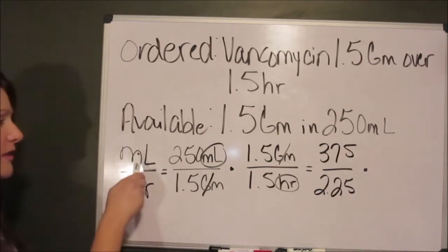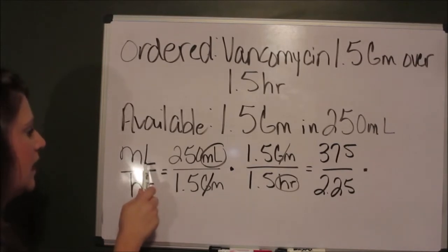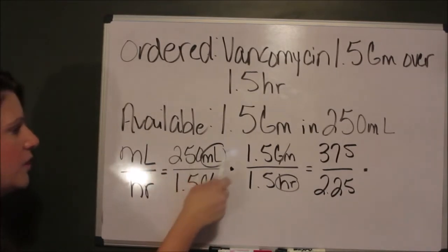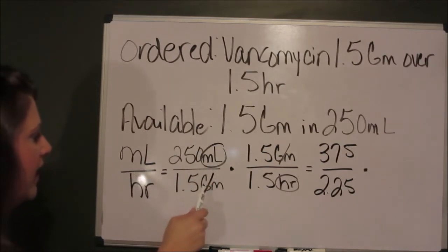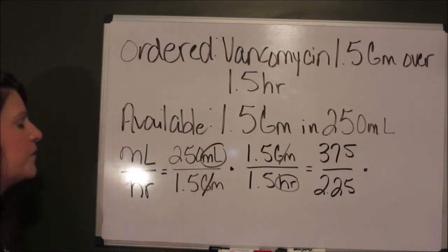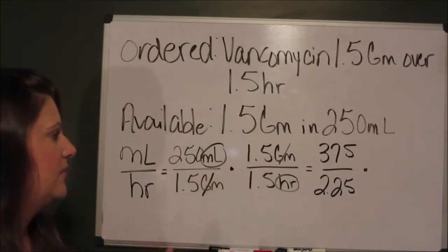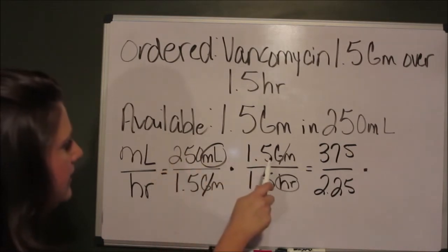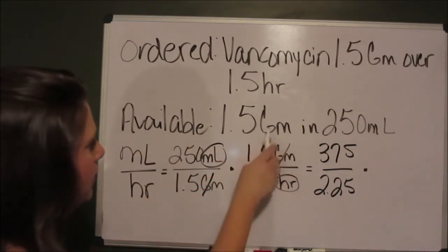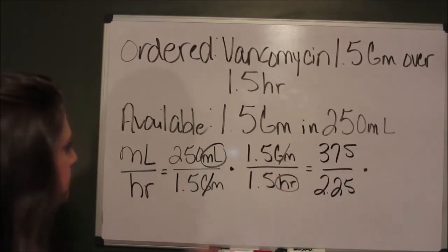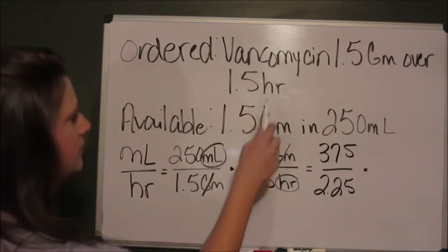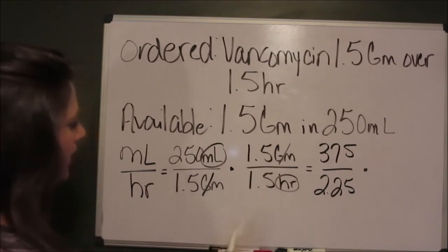We're going to set up our problem for what we want, which is milliliters per hour. Since milliliter is on top, we're going to put our milliliter value on top in our very first fraction. We have 250 milliliters with 1.5 grams. We have to figure out how we're going to get rid of this gram because that does not factor into our milliliter per hour. We're going to have to get that cancelled out. The way that we do that is by then putting what we are given here. The next fraction is the 1.5 grams of vanc to run in over 1.5 hours. We have the 1.5 grams over the 1.5 hours.